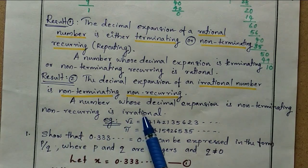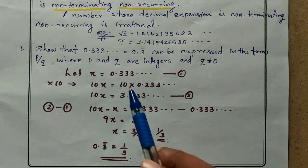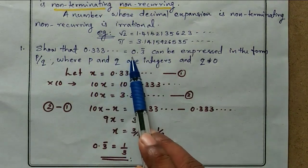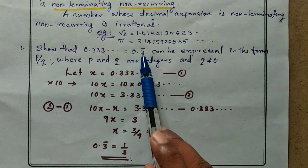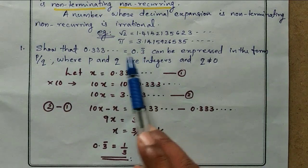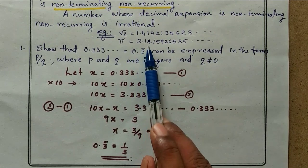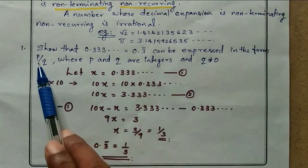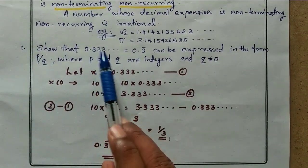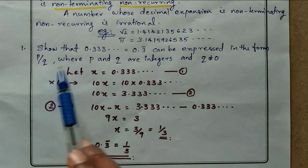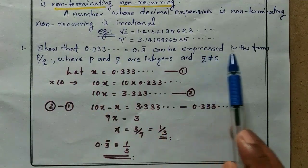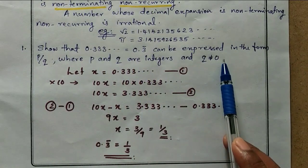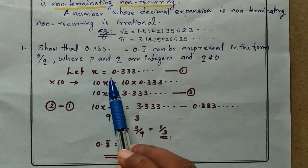Question number one: show that 0.333... equals 0.3 bar, where bar means the number 3 is repeating. So 0.3 bar means 0.333... It can be expressed in the form p/q, where p and q are integers and q is not equal to 0. Let us start with x equal to 0.333...